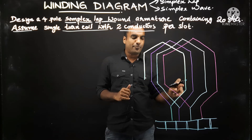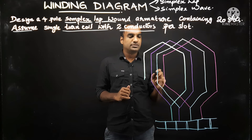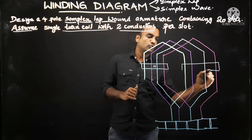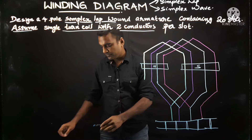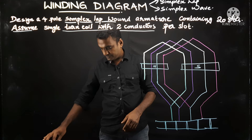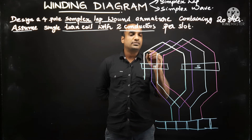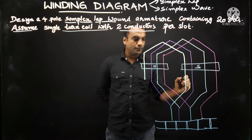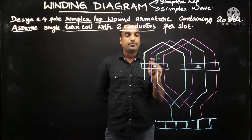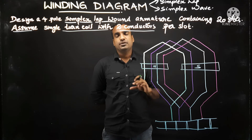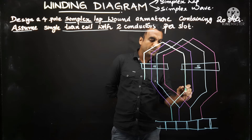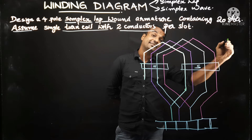This is a lap connected system — suppose this is a north pole and this is the corresponding south pole. It is lap because this is the first coil drawn in green ink, with its beginning end and finishing end. The second coil, shown in pink, is connected under the same north pole — that is why it is lap winding. If it were wave winding, we would go to the next north pole; the finishing end of the first coil connects to the beginning end of the second coil under the next north pole.